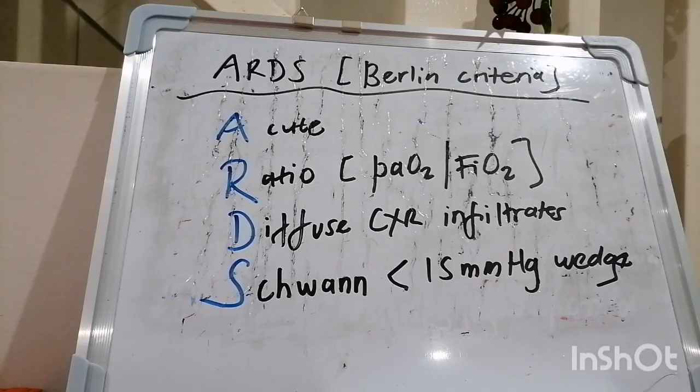Inhaled nitric oxide or epoprostenol, selectively dilate pulmonary vessels of the ventilated alveoli, improving ventilation perfusion matching.